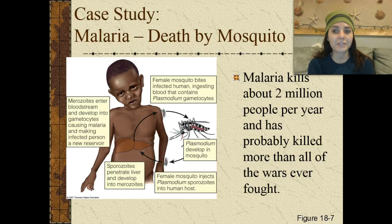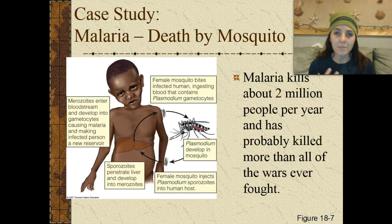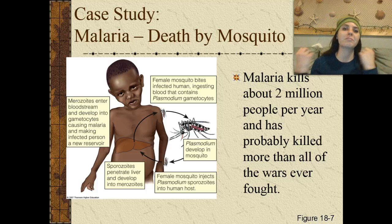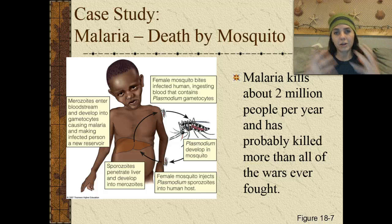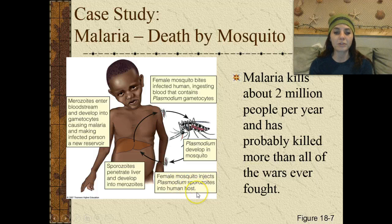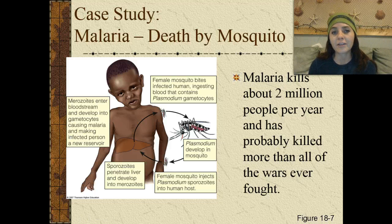Another case study is malaria, or death by mosquito. Malaria kills about 2 million people per year and has probably killed more than all of the wars ever fought on Earth combined. Malaria is transmitted when a female mosquito bites an infected human, ingesting blood containing Plasmodium gametocytes. The mosquito becomes a vector or carrier. The Plasmodium develop in the mosquito, which then injects Plasmodium sporozoites into a human host. These sporozoites penetrate the liver, develop into merozoites, enter the bloodstream, and develop into gametocytes, causing malaria and making the infected person a new reservoir.